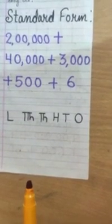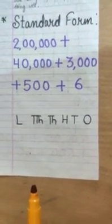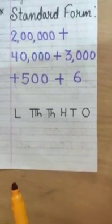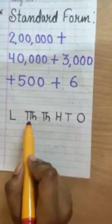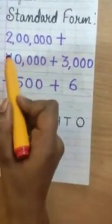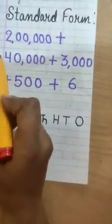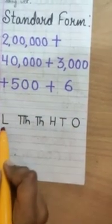But, it will take a lot of time if we will add all the numbers. Just take the number and write all the places. Like, ones, tens, hundred, thousand, ten thousand, lakh. Because, here maximum place is given as lakh, two lakh. I have written only till lakh.